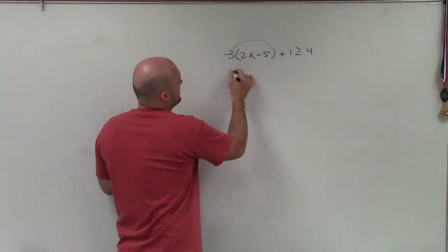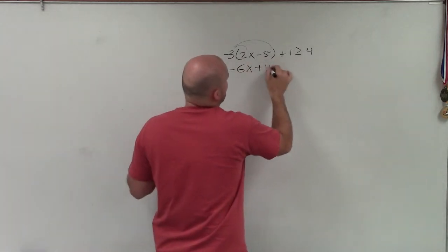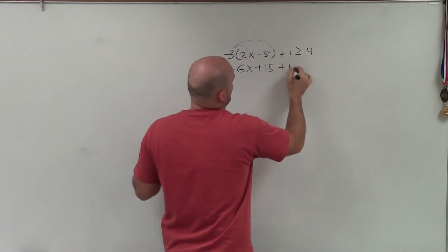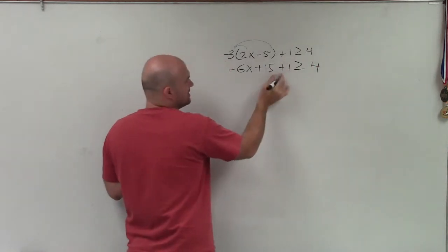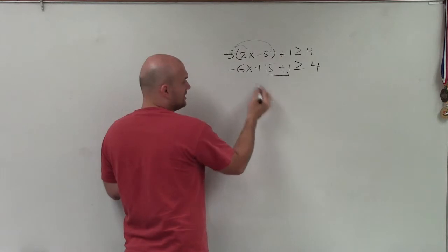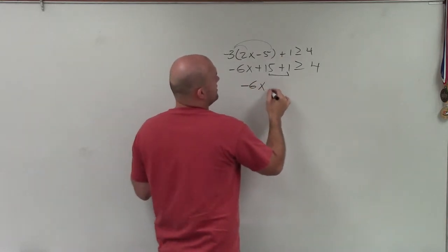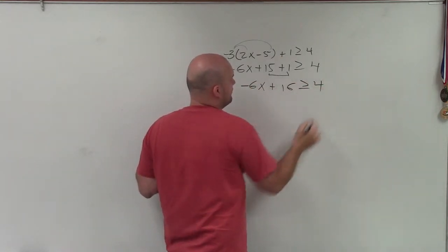So I apply the distributive property. We're going to get negative 6x plus 15 plus 1 is greater than or equal to 4. I can combine these two as their like terms. So I have negative 6x plus 16 is greater than or equal to 4.